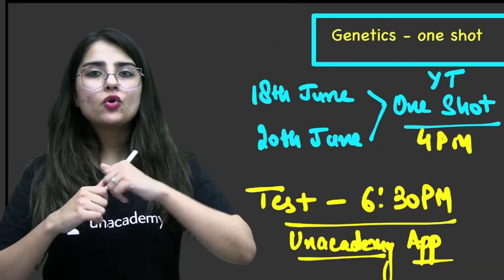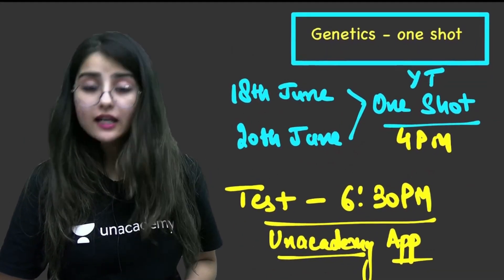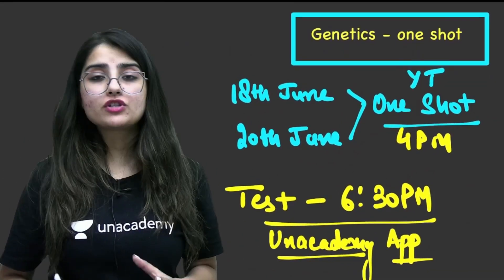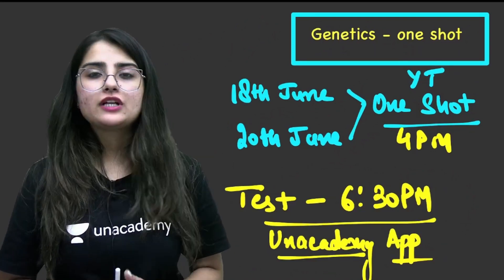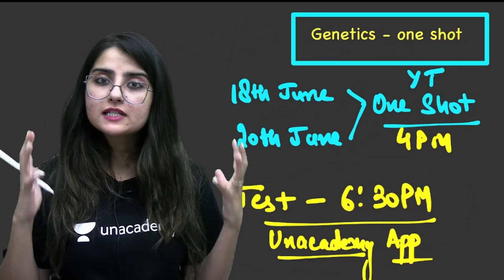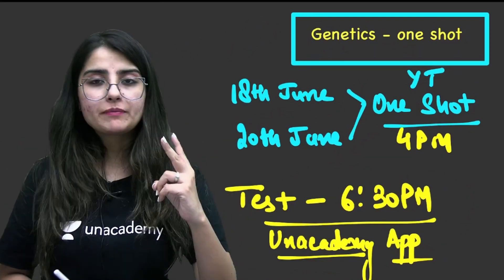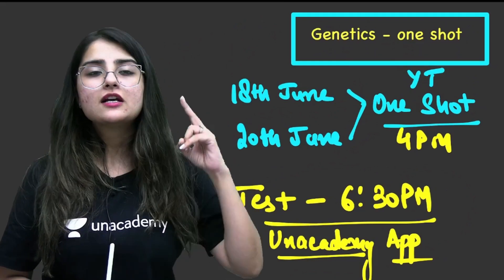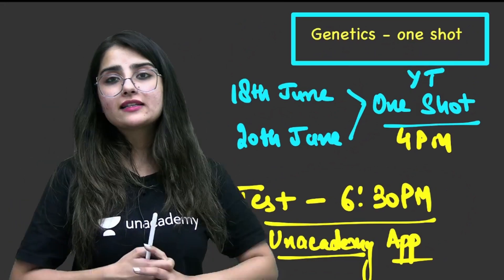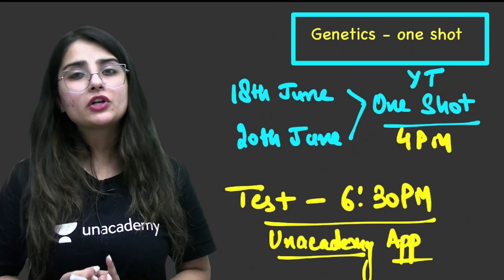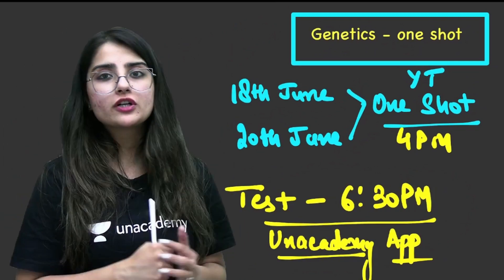Hi everyone, we are going to now start with the last and the most important unit of NEET Biology. The most important thing is that you keep two chapters in class 12 — that is genetics. In genetics, there are two chapters: Principles and the Molecular Basis of Inheritance. We are going to do these two chapters in one shot.